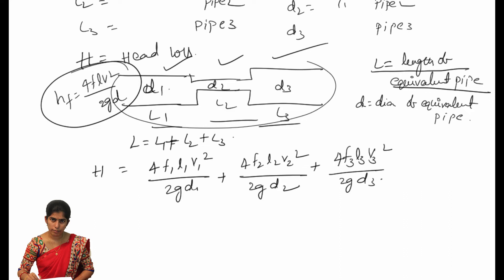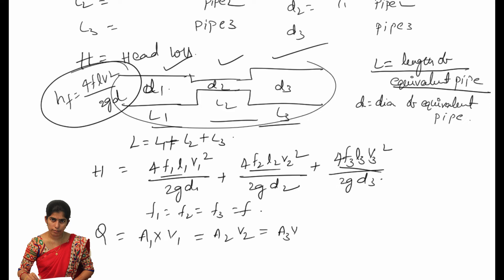Here I am considering F1 = F2 = F3 = F, so I can substitute a single F. For the discharge, we have Q = area × velocity. For the first pipe it becomes A1·V1, for the second pipe A2·V2, and for the third pipe A3·V3.